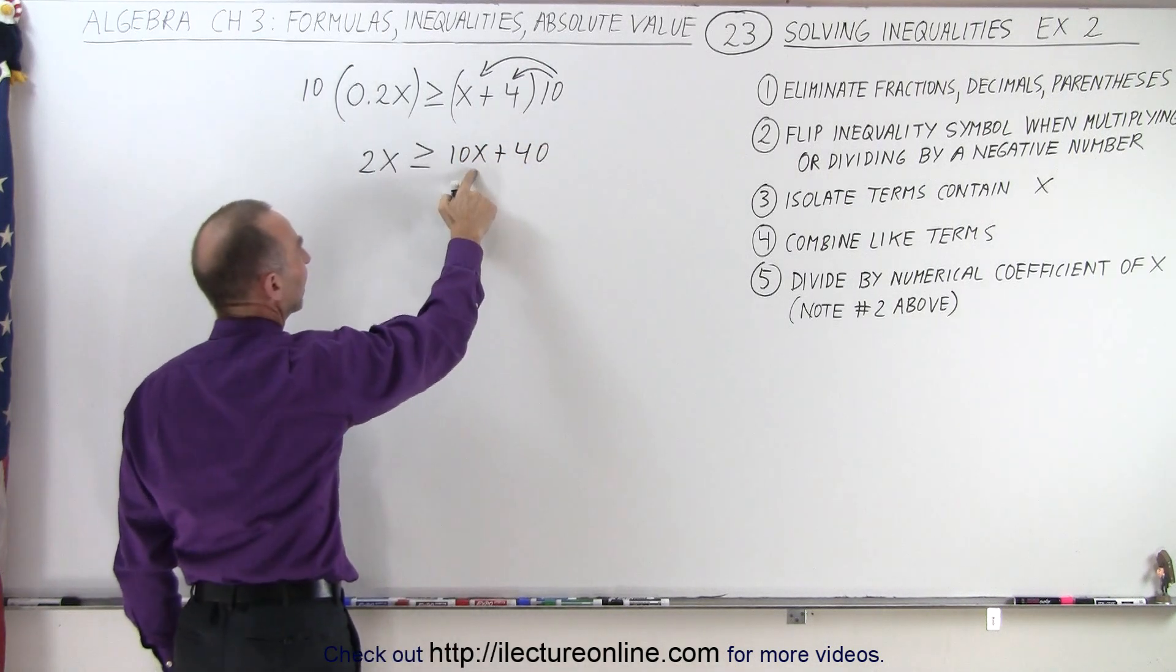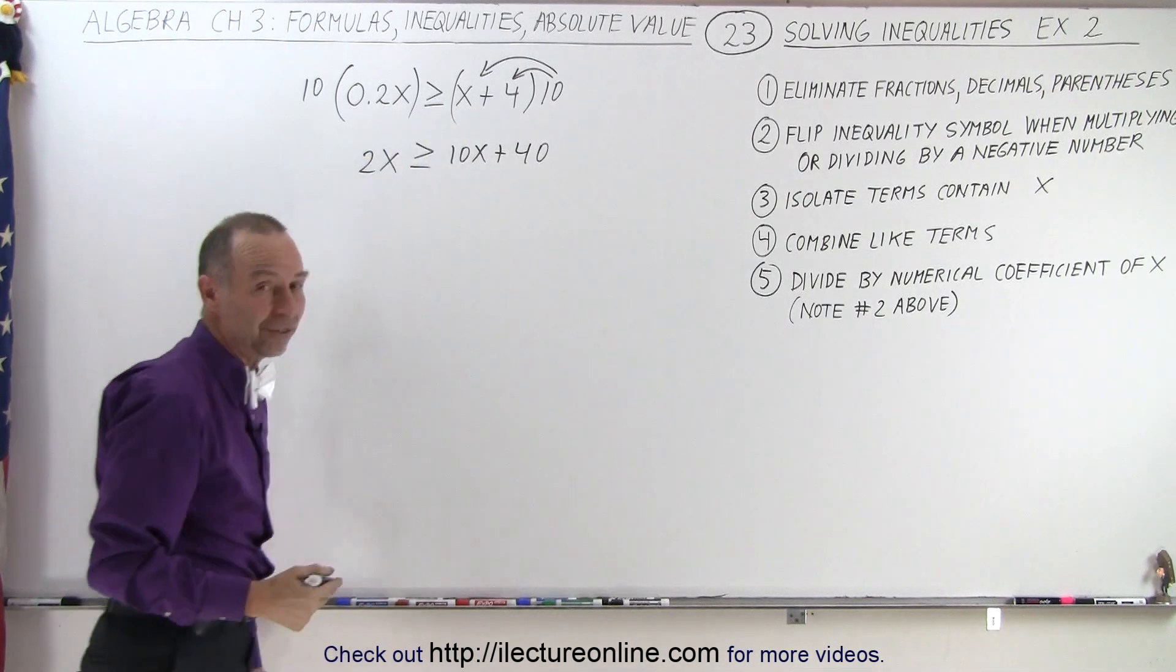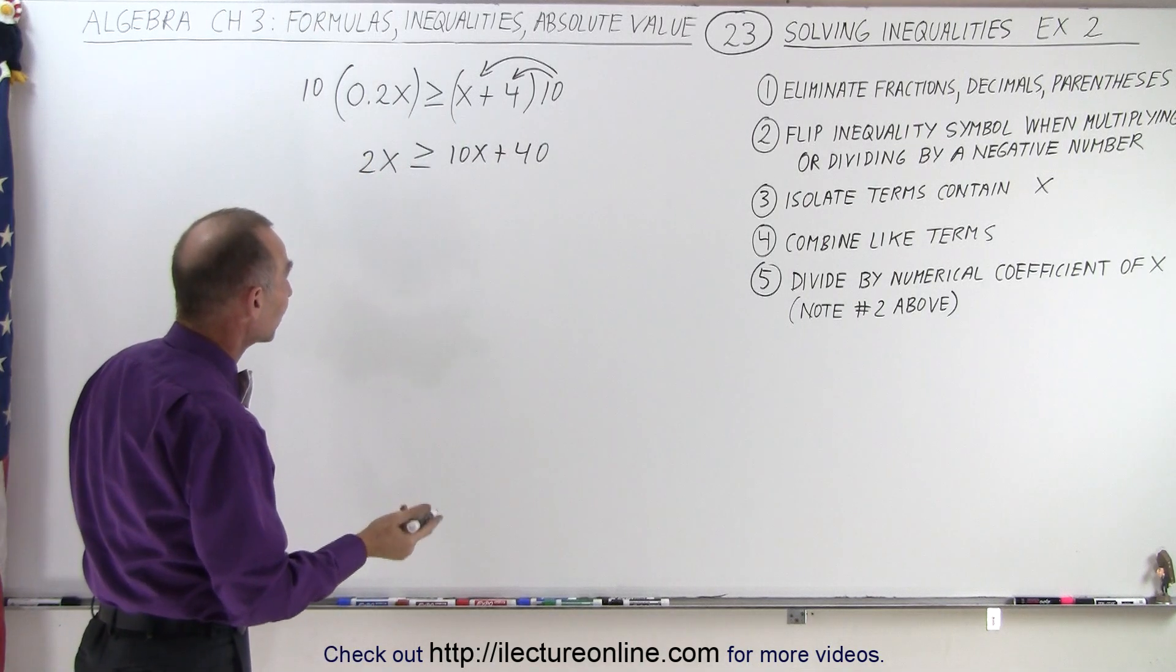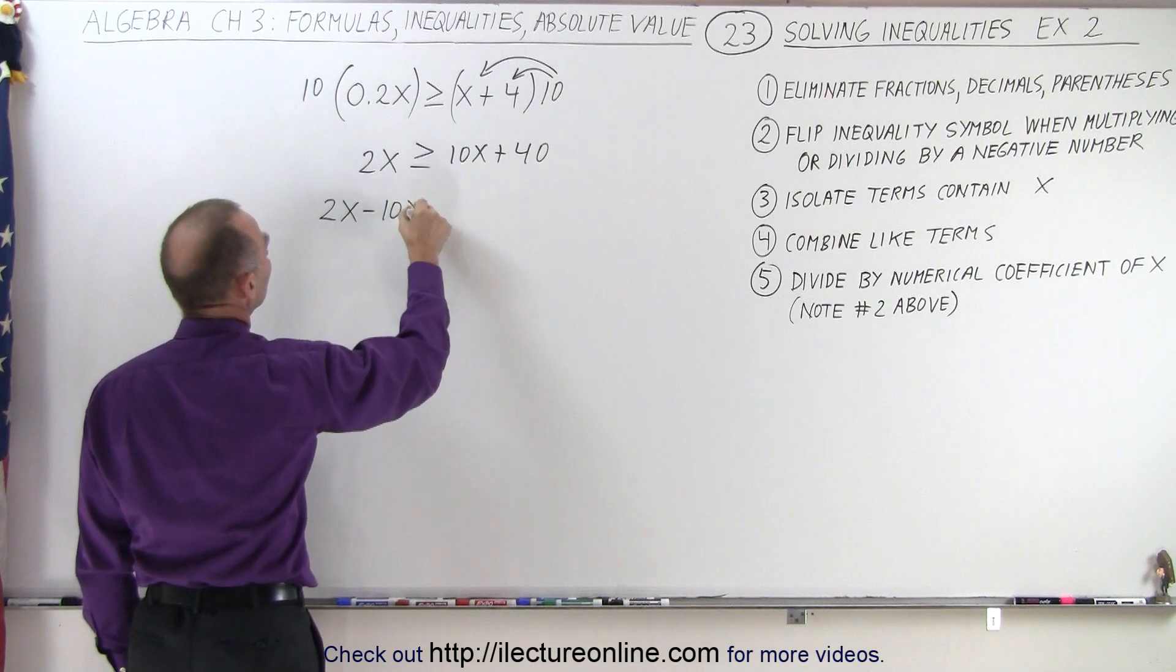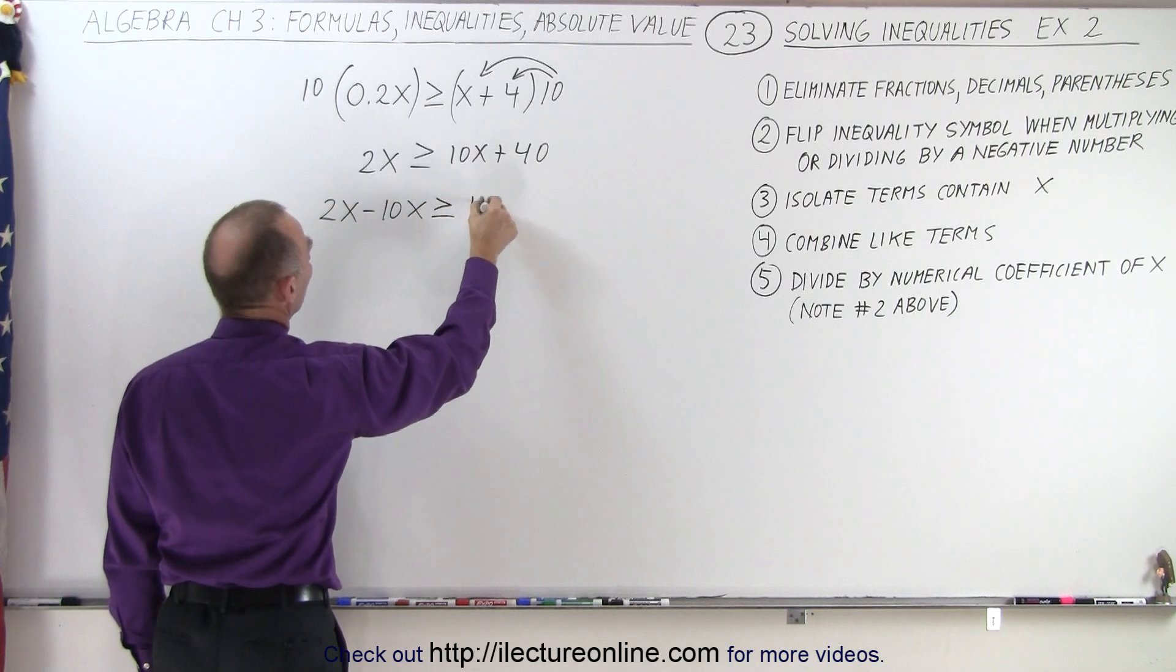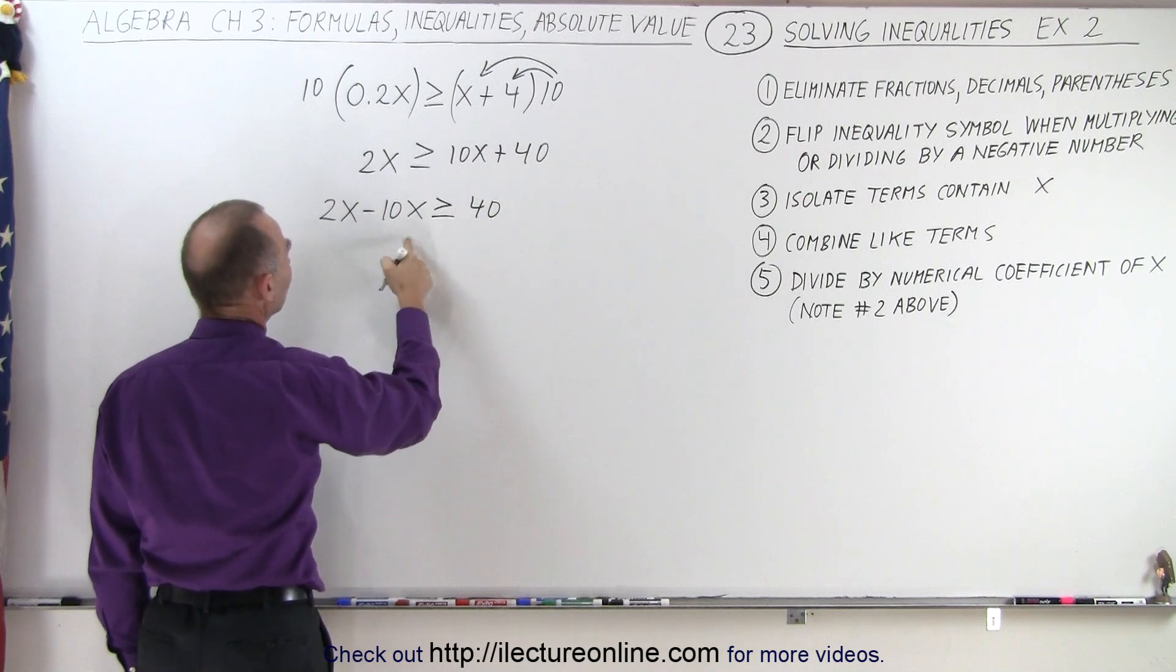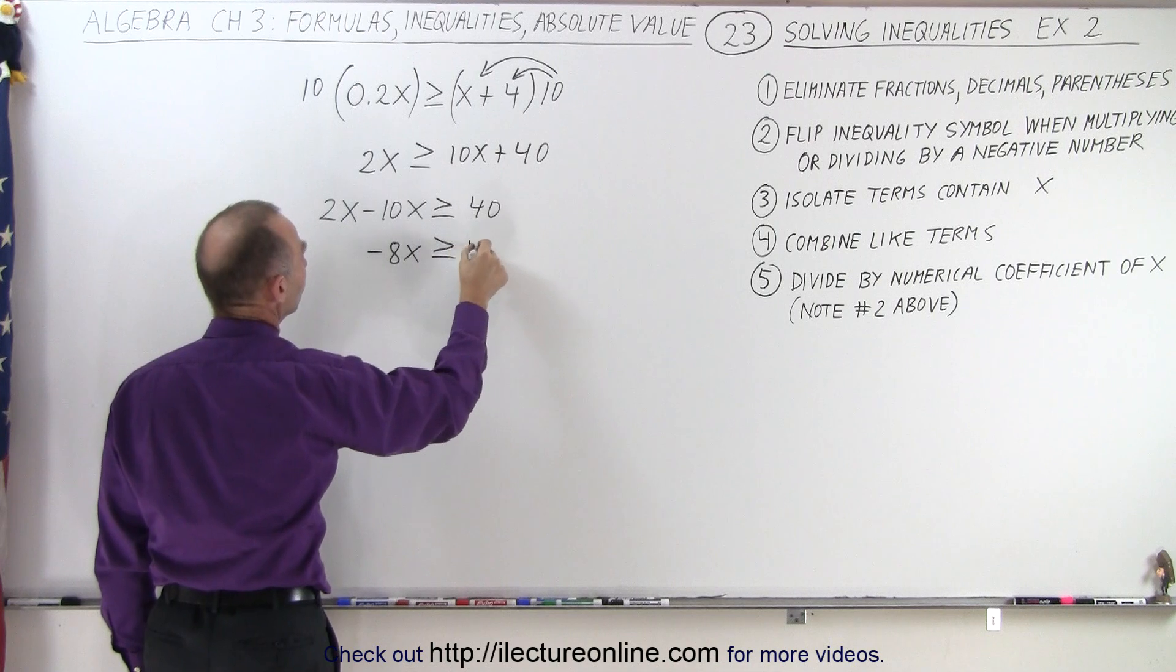Now I see I have a 10x on the right side. I need to move that to the left side. When I cross that inequality symbol, that 10x becomes a negative 10x. So I have 2x minus 10x, it's greater than or equal to 40. And when we combine these like terms, negative 8x is greater than or equal to 40.